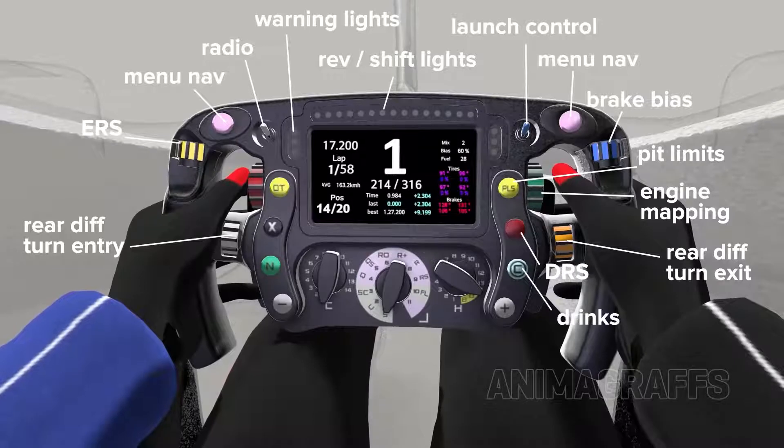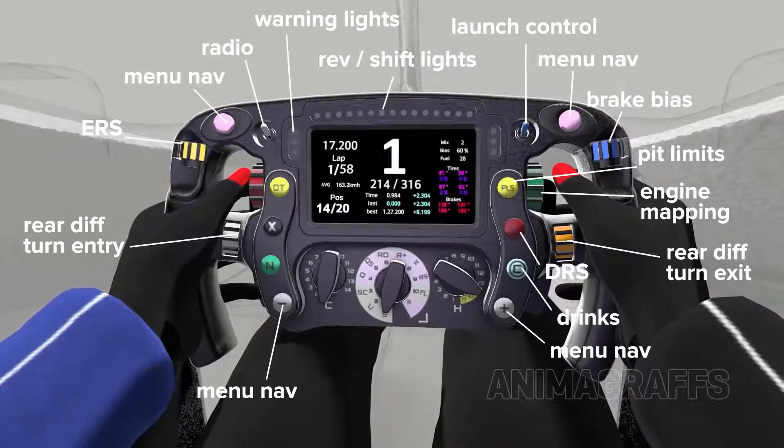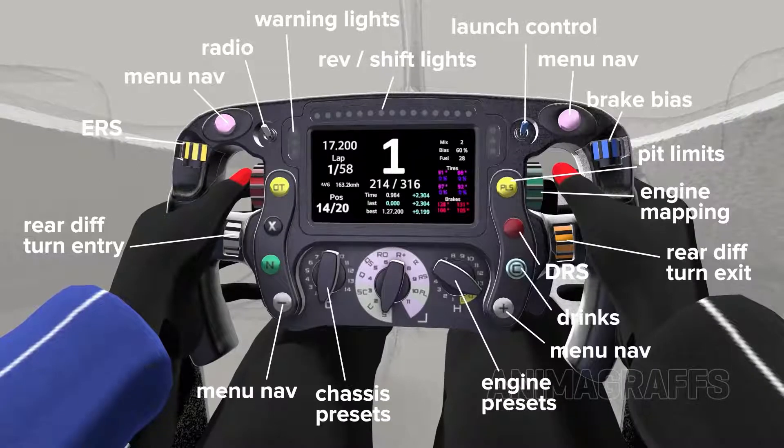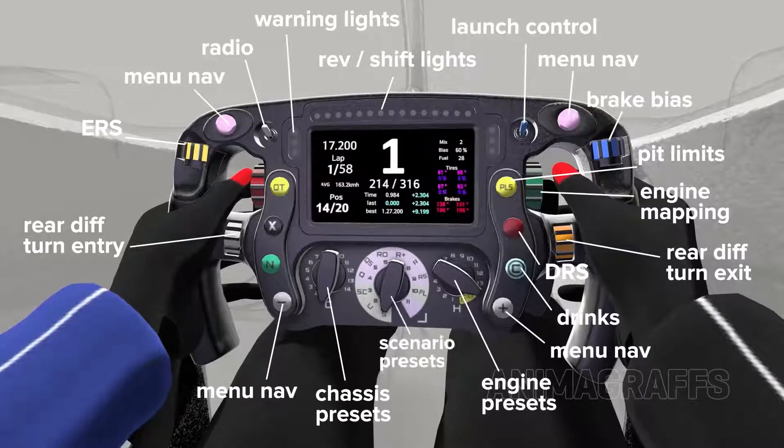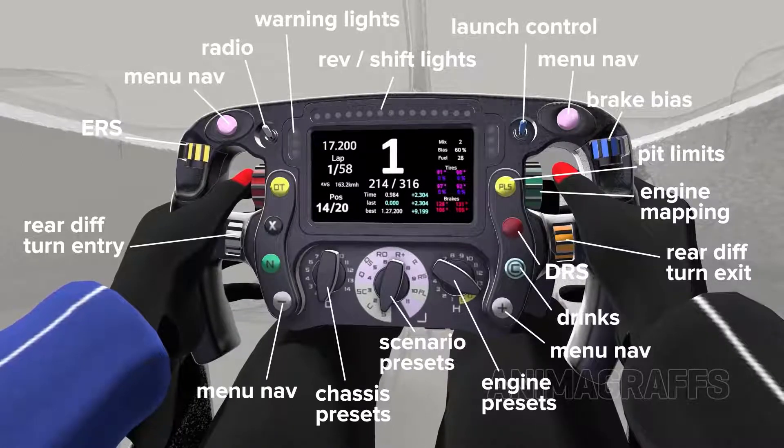Rear differential lock open or closed adjustment with separate turn entry and turn exit adjusters, the drinks dispenser button, more settings navigation buttons, three programmable preset dials for the engine, chassis, or suspension, and a scenario selector for things like wet weather or tire preservation presets.